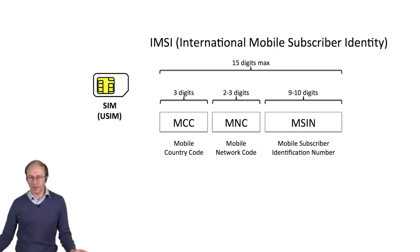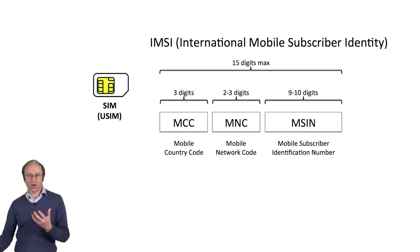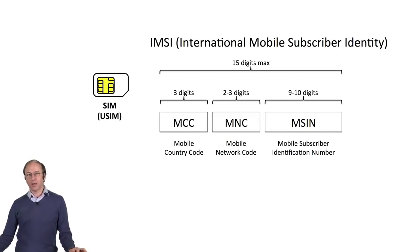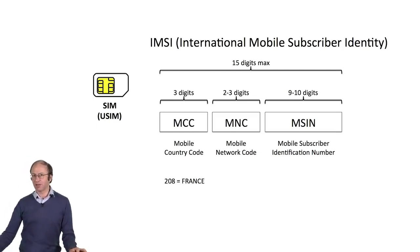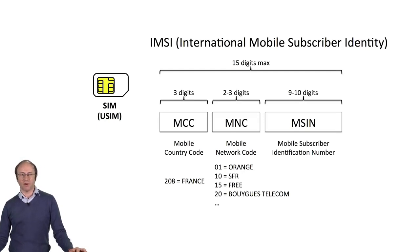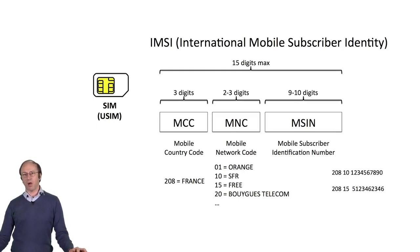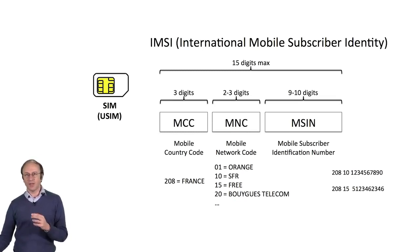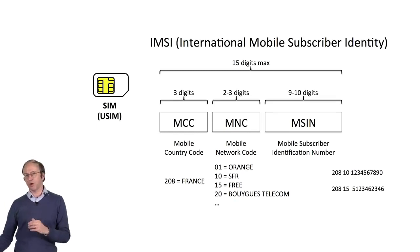The beginning of the IMSI therefore indicates to which country and operator the subscriber belongs. For example, the MCC for France is 208, and 10 is the code of SFR. Here are two examples of IMSIs from two subscribers with different French operators. The IMSI of a subscriber never changes, unless he changes operators, of course.